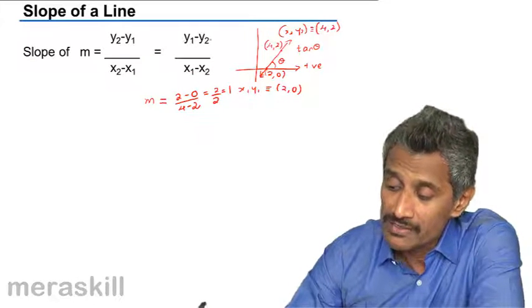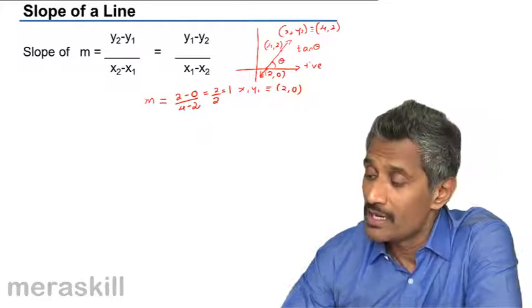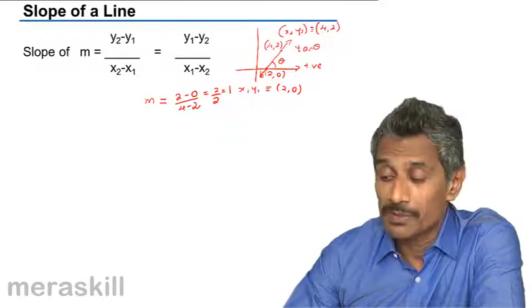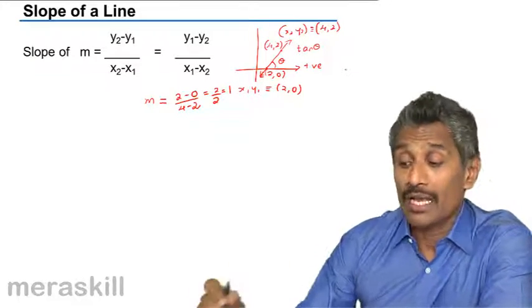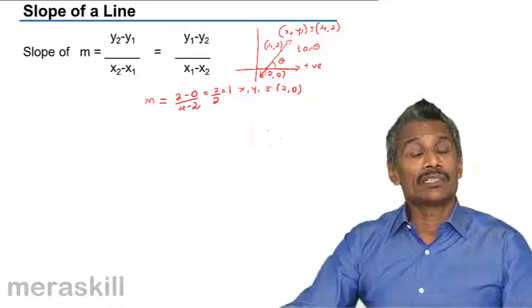So the difference in y-coordinate upon the difference in x-coordinate will give us the slope of a particular line. We can write the equation of the line in terms of the slope.